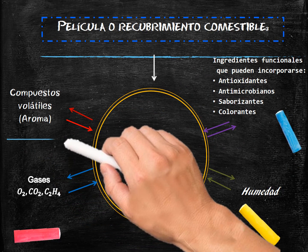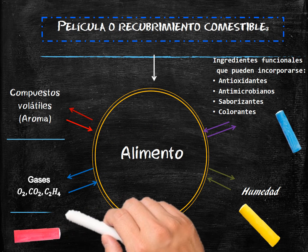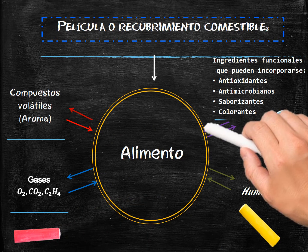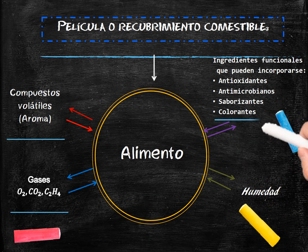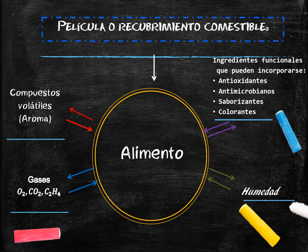Components that can be retained or controlled include volatile compounds, gases, functional ingredients, antioxidants, antimicrobials, flavours, colourants, humidity, and more.